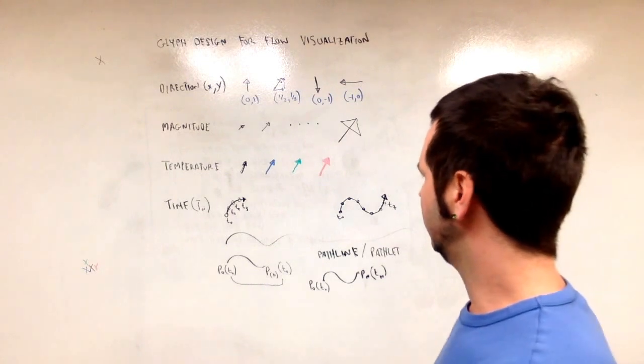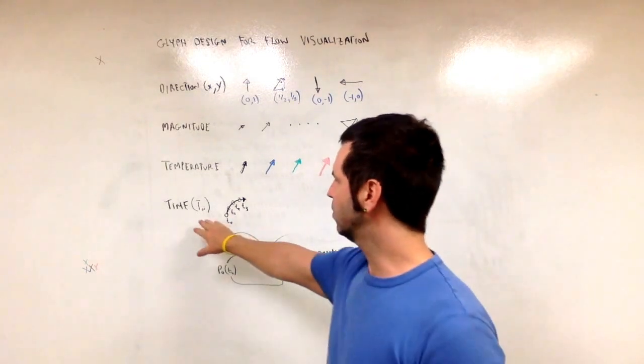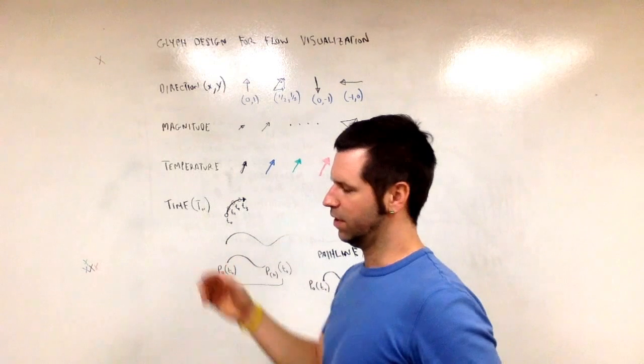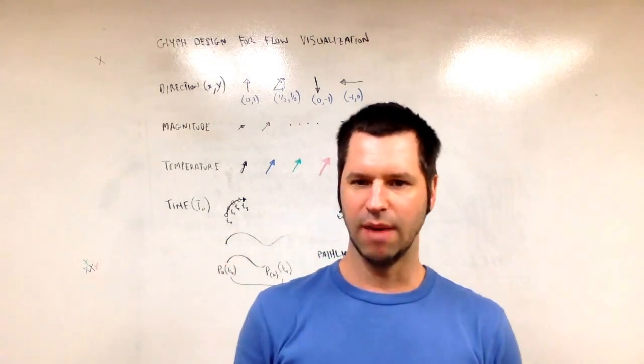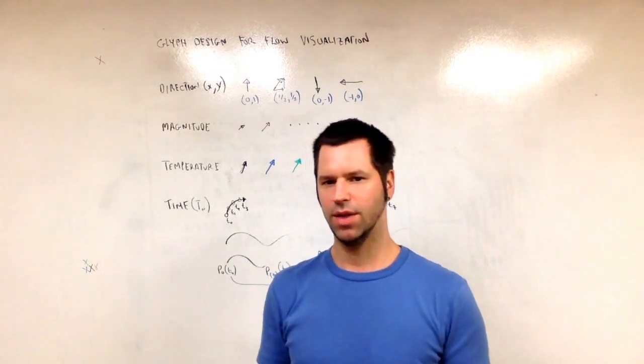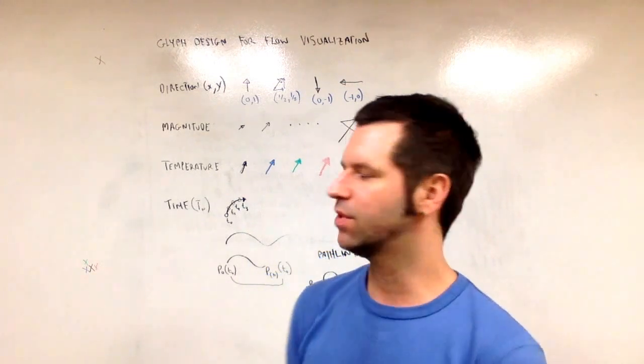Some other possibilities could be time could be mapped to opacity. So for example, older time steps could be more opaque than the newer time steps or the more recent time steps.